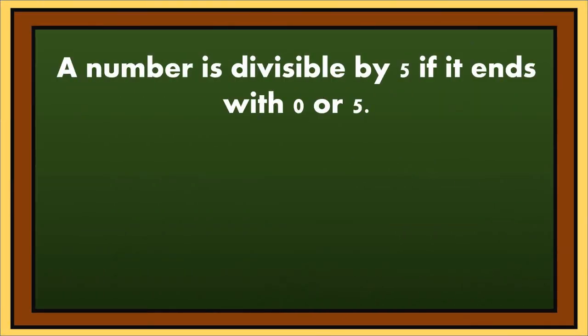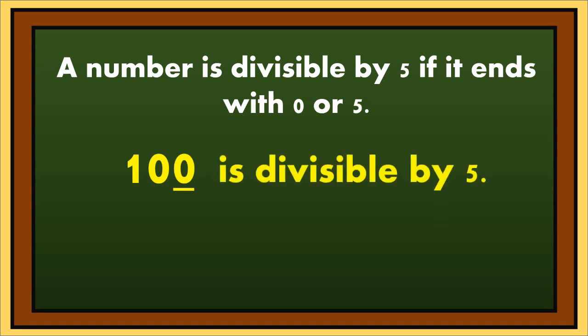Another example: 100 ends with 0. Therefore, 100 is divisible by 5. If we divide 100 by 5, the answer is 20.